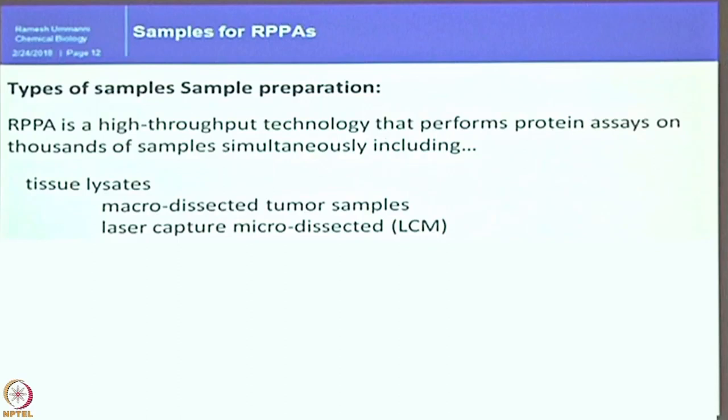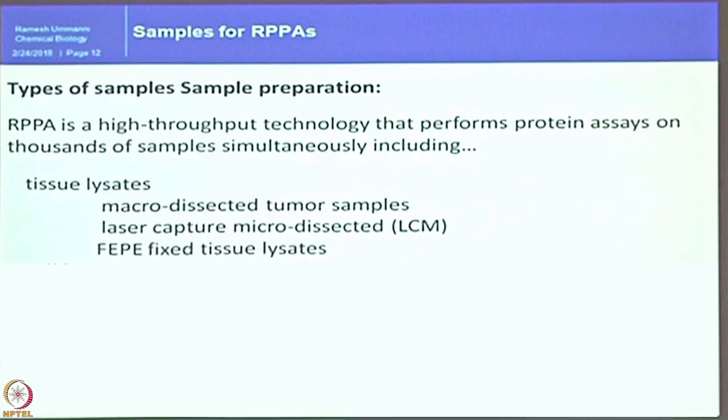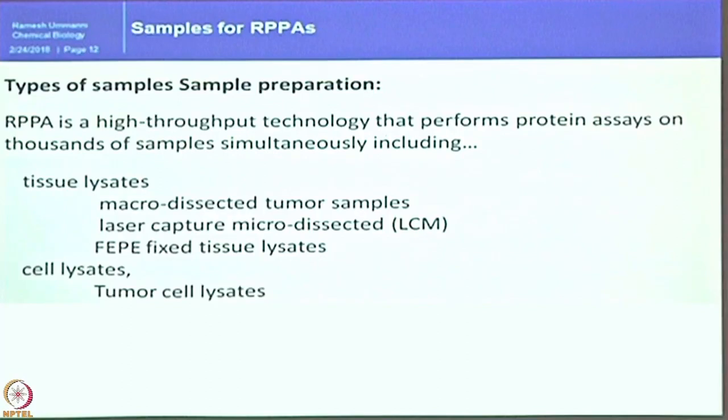With laser capture micro dissection (LCM), you end up with very very low quantities of sample and cannot perform n number of western blots to validate n number of targets. PFA fixed tissue lysates can also be used — there are separate methods available to extract protein from formalin fixed tissues for RPMAs. Sometimes those samples cannot be analyzed by western blotting due to a smearing effect, which can be avoided here. For cell lysates, particularly tumor cell lysates, many of you might be handling cell lines in the lab.